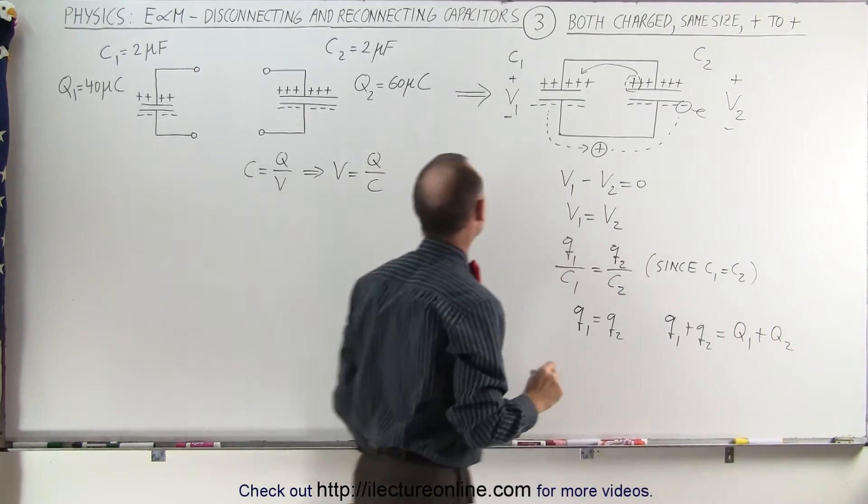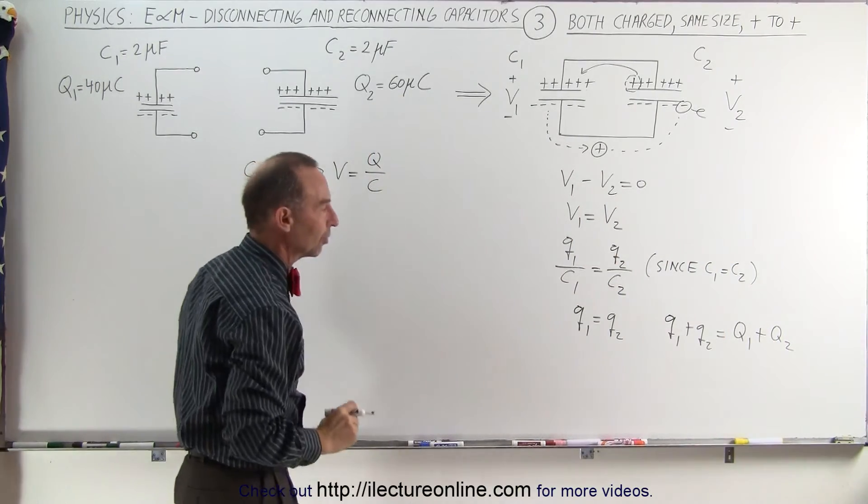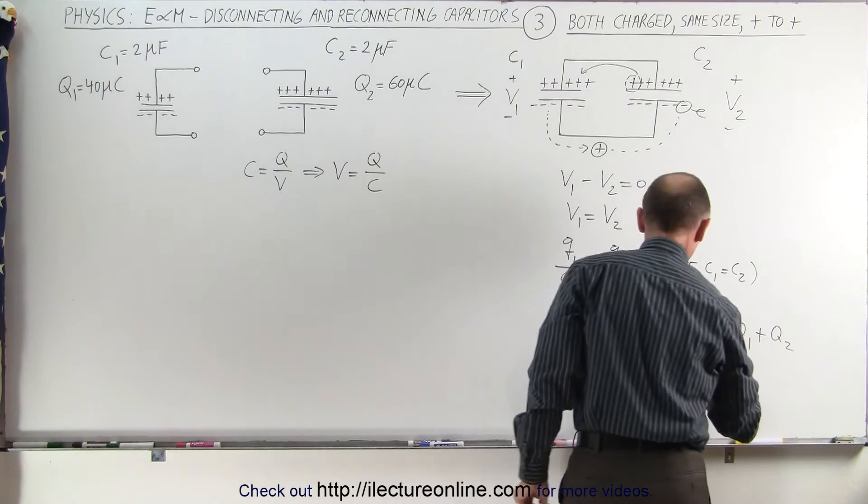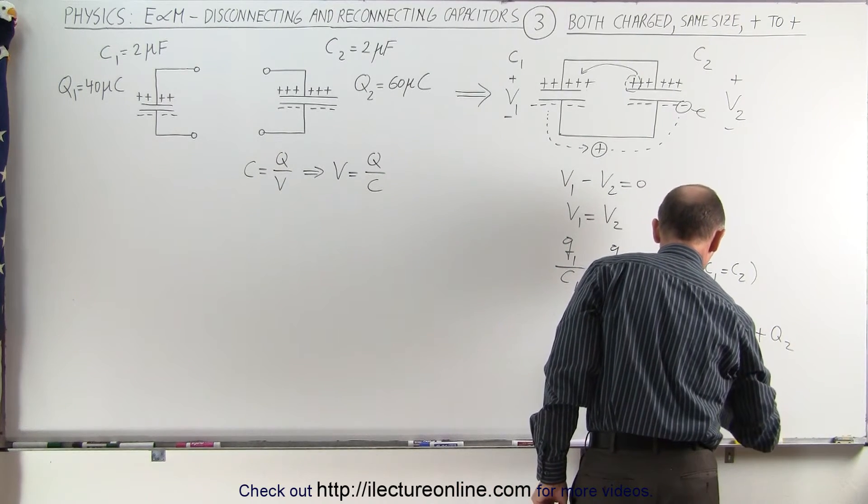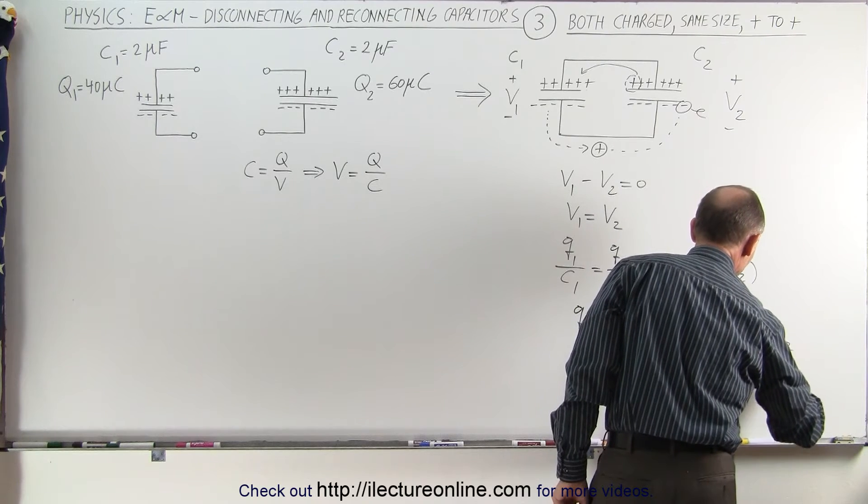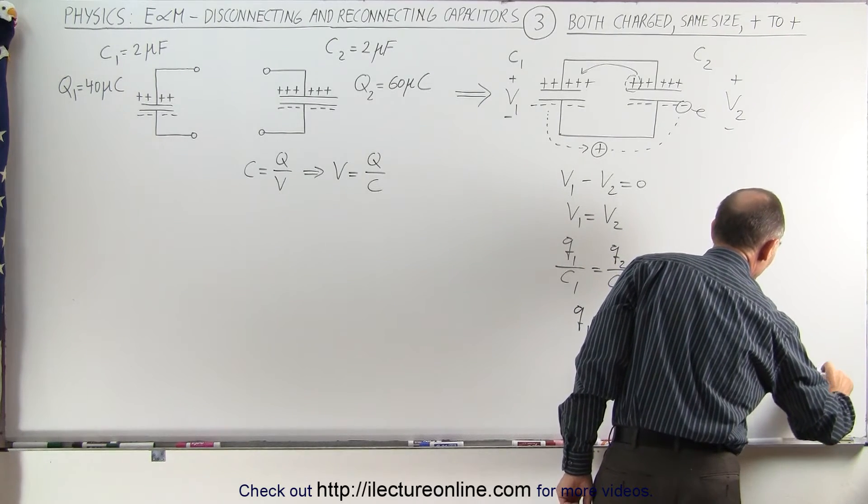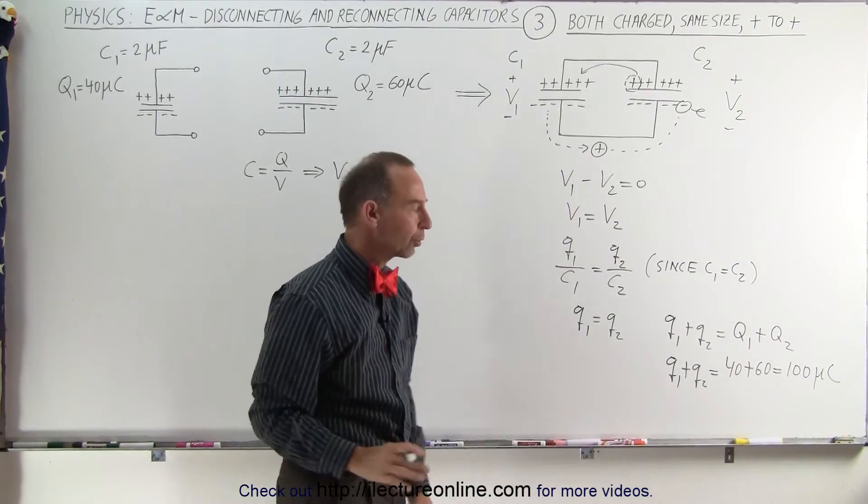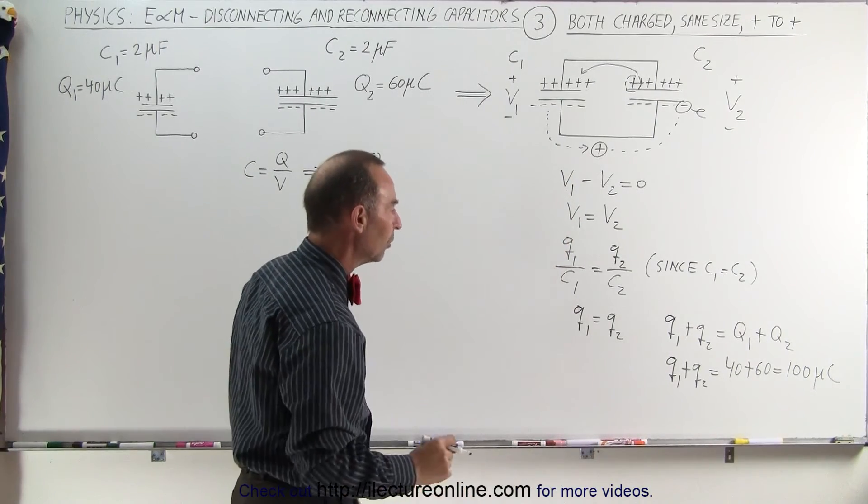Where Q1 and Q2 are the original charges on the two capacitors, which means that Q1 plus Q2 is equal to 40 plus 60, which is 100 microcoulombs. Now we're going to leave out the microcoulombs to make the cleaner equation.